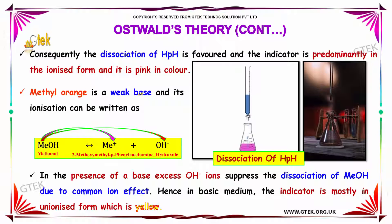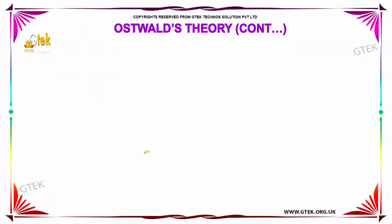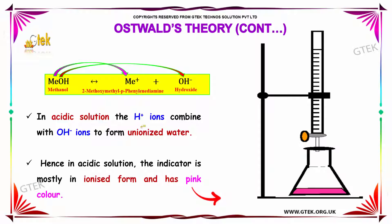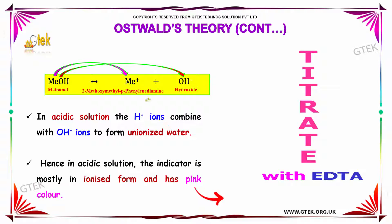Methyl orange is a weak base and its ionization can be written as: MeOH gives Me⁺ and OH⁻. In the presence of a base, excess OH⁻ ions suppress the dissociation of MeOH due to the common ion effect. Hence, in basic medium, the indicator is mostly in unionized form, which is yellow in color. In acidic medium, the H⁺ ions combine with OH⁻ ions to form unionized water. Hence, in acidic solution, the indicator is mostly in ionized form and has a pink color.